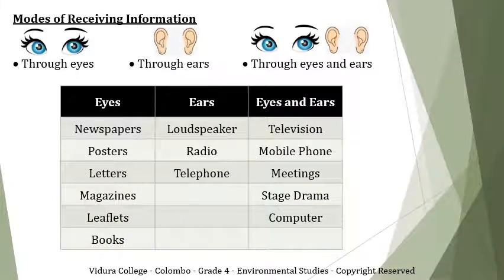Now we are going to learn modes of receiving information. Through eyes — that means we can see them — this is called visual. Through ears — that means we can hear them — this is called audio. Through both eyes and ears — we can see and hear — this is called visual and audio.